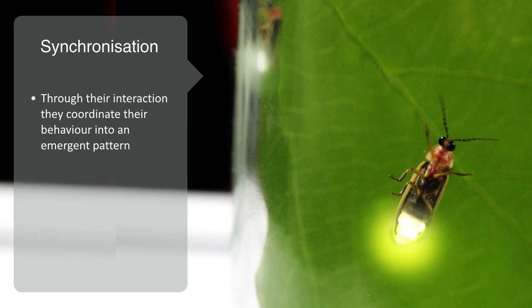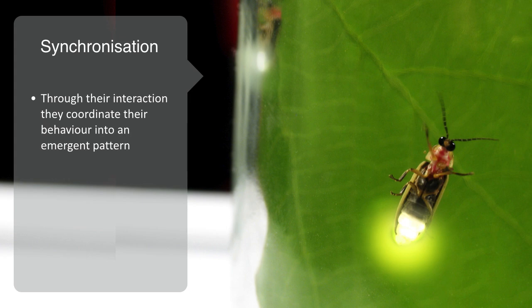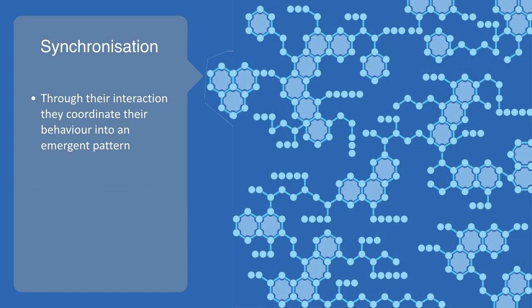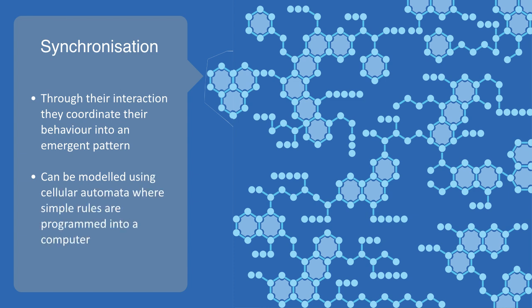This type of quite basic self-organization can be modeled using cellular automata, where very simple rules are programmed into a computer, and out of the interaction between these simple agents, we see emerging surprisingly dynamic patterns that are able to stay evolving over prolonged periods of time to produce novel behavior.